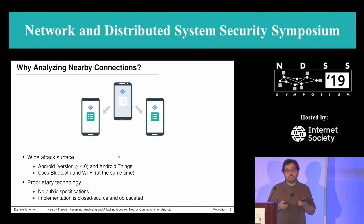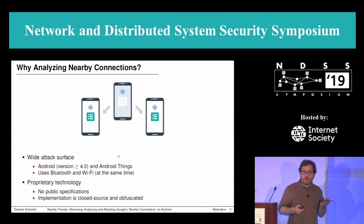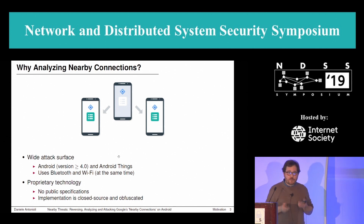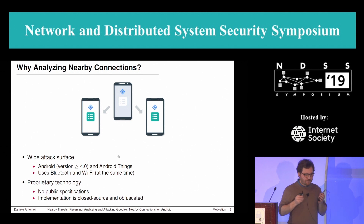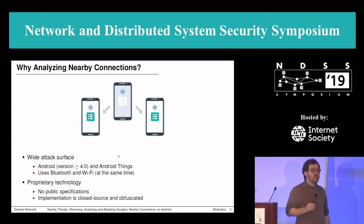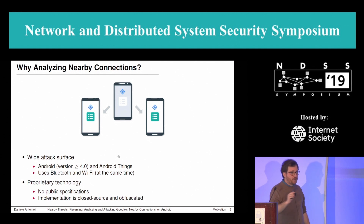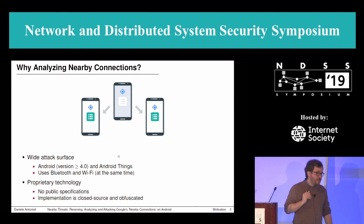The attack surface is also widened by the fact that this API uses complex wireless technologies — namely Bluetooth and Wi-Fi, even at the same time. Despite this wide attack surface, there are no public specifications of Nearby Connections. The implementation is done by Google, shipped in most phones in our pockets, but is closed source and obfuscated.